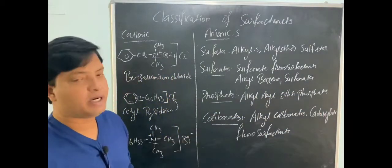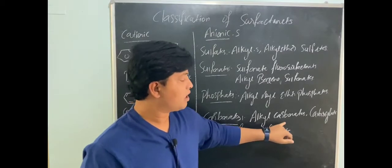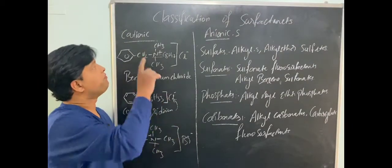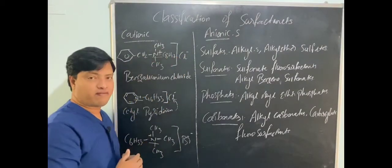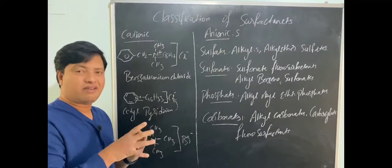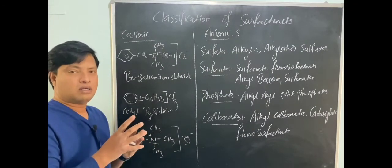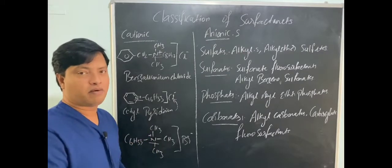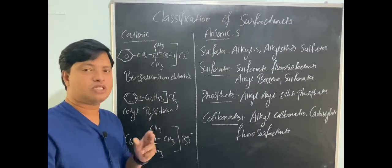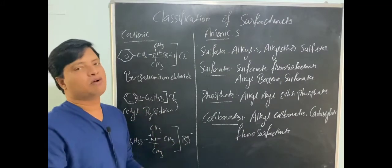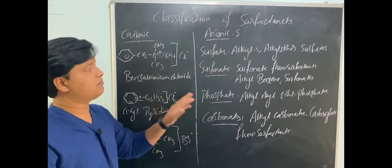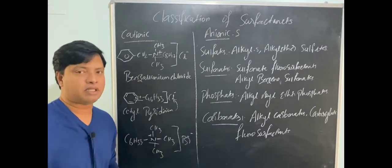Now what happens when we mix this cationic and anionic surfactants? Because they have opposite charge, they try to mix with each other and they form complex. That complex is insoluble in water. Surfactants are generally soluble in water, but if you mix opposite charge surfactants, they form a complex. This complex is insoluble in water, which we call it as incompatibility. You should not mix these two in a single formulation.